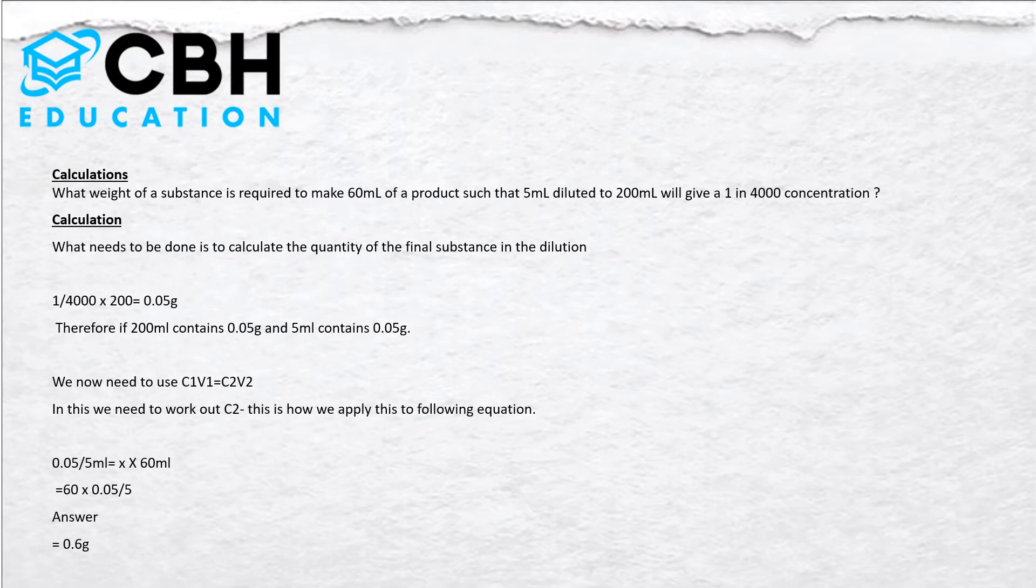The question is: what weight of substance is required to make 60 ml of a product such that 5 ml diluted to 200 ml will give a 1 in 4000 concentration?